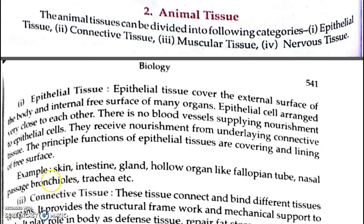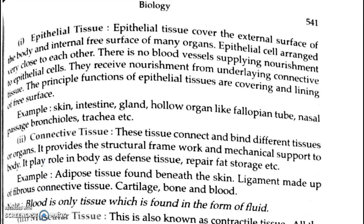Examples of epithelial tissues are: skin, intestine lining, glands, hollow organs like fallopian tubes, nasal passage, and bronchioles. Now we come to the second type — connective tissues.